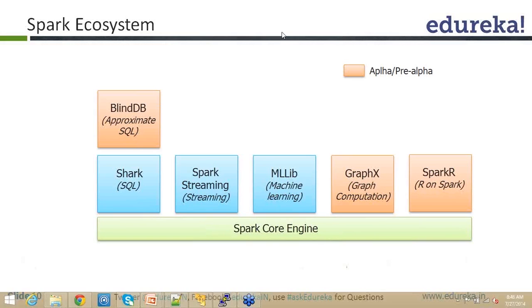Let me cover them in a bit more detail. First of all, the Spark Core Engine — it's all about writing your raw Spark program, writing your Scala program and launching it, or writing your Java program and launching it. All of that is executed by the Spark Core Engine. On top of it, there are various projects that have come up.